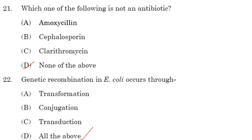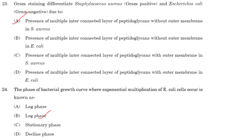Genetic recombination in E. coli occurs through transformation, conjugation, and transduction — all of the above. Gram staining differentiates Staphylococcus aureus and Escherichia coli, with E. coli being gram negative.